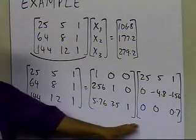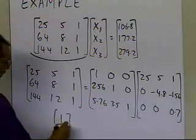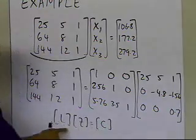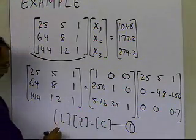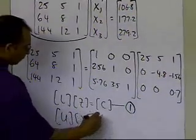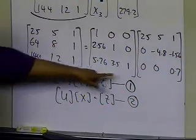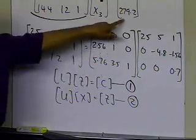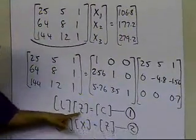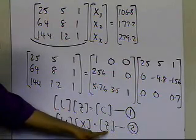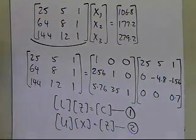This is the LU decomposition of the coefficient matrix. Now we say L times Z equals C, where C is the right-hand side vector and L is the lower triangular matrix — we find Z from there as our first set of equations. Once Z is found, we then solve U times X equals Z as our second set of equations. So once we solve the lower triangular system, we find Z, then plug it into the upper triangular system to find X.